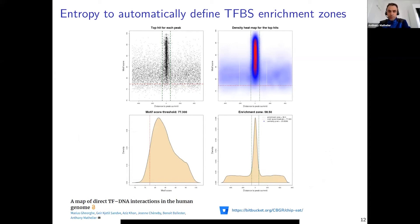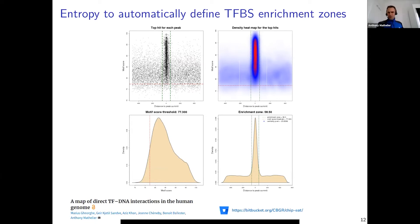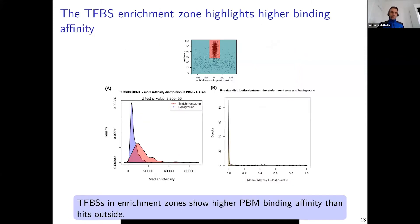Applying this image-denoising approach to our ChIP-seq data works quite nicely. We use the histogram of motif scores to automatically identify the threshold on motif score, then do the same for distance to peak summit. The enrichment zone is automatically identified in a data-driven way with no manual parameters. We published this as the 'ChipIt' tool a couple of years ago and first applied it to about 2,000 human ChIP-seq experiments to provide transcription factor binding sites from this enrichment zone — representing predicted direct TF-DNA interactions.